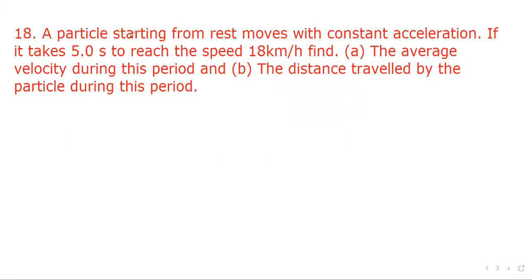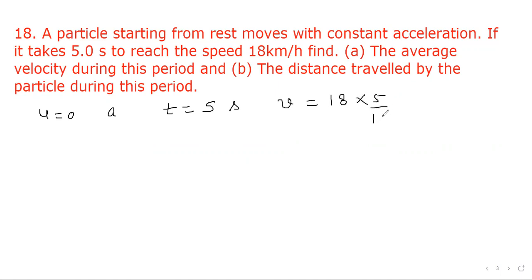Question number 18: A particle starting from rest (u = 0) moves with constant acceleration. It takes 5 seconds to reach a speed of 18 kilometer per hour, which can be written as 18 × (5/18) = 5 meter per second. Find the average velocity and distance traveled during this period.